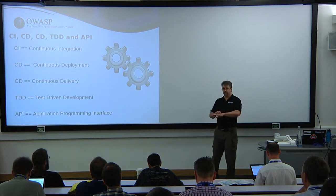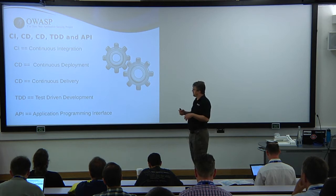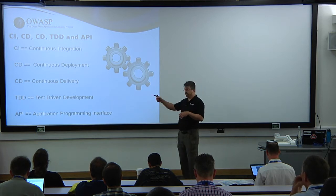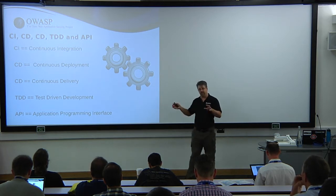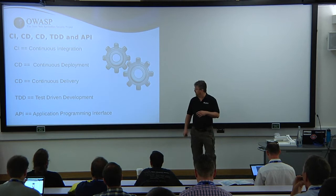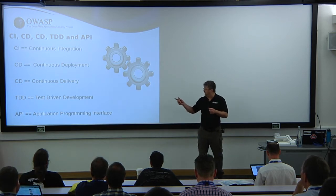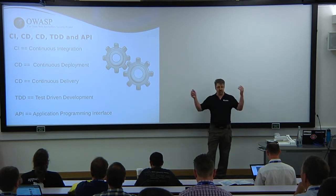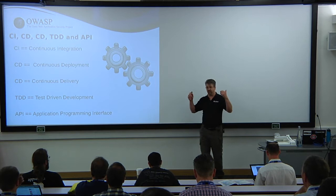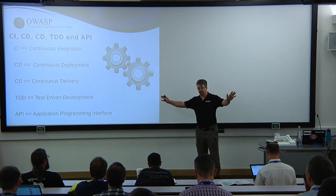Just so we have all the terms laid out: CI is continuous integration, CD is continuous deployment — though I've also seen CD mean continuous delivery, which are both kind of the same thing depending on how pedantic you want to be. TDD is test-driven development, and API is application program interface. Just so that everybody has the same terms.